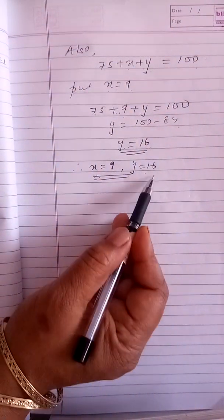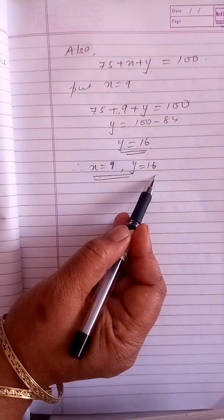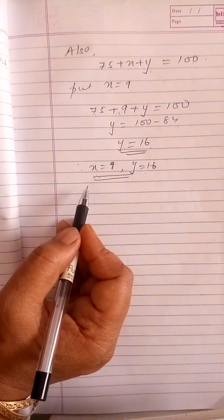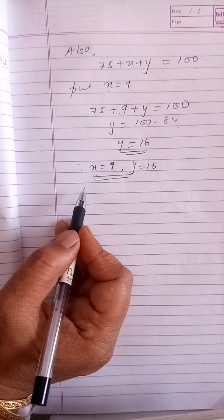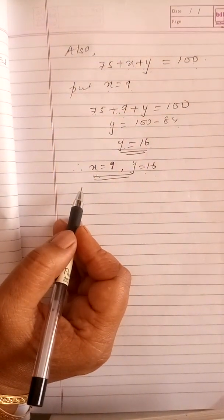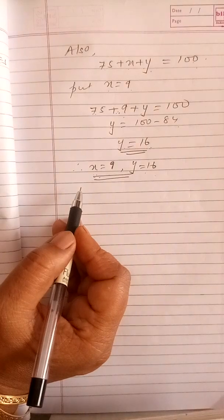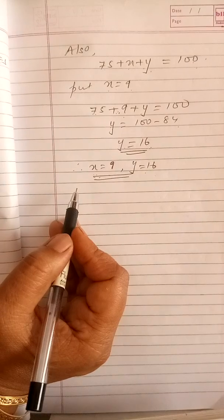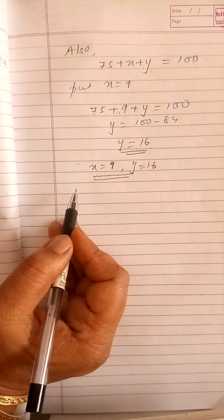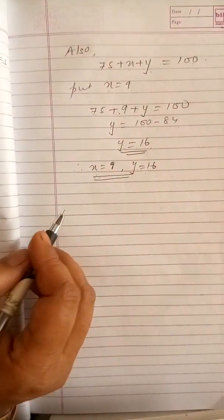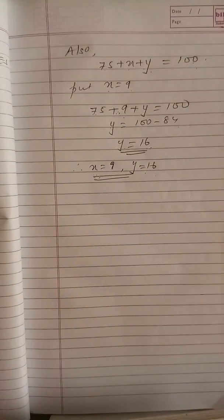Hence, the values of x and y are 9 and 16 respectively. This is a very important question from the point of view of the board exams. That means you get a 4 marker question on finding the missing frequencies when the median is given to you. So practice this question sufficiently, because it is very important from the point of view of the board examination. It's a 4 marker question straightforward. Thank you.